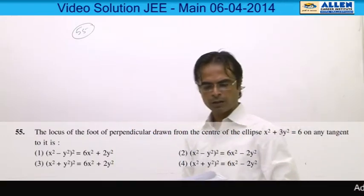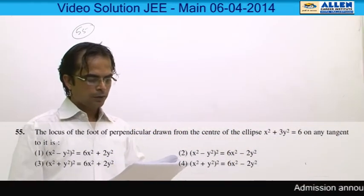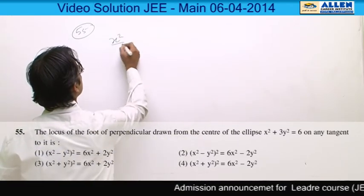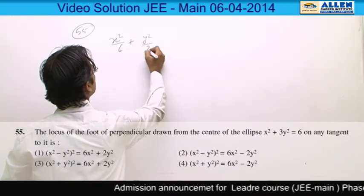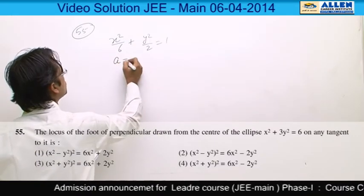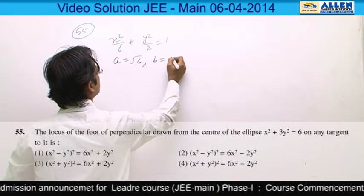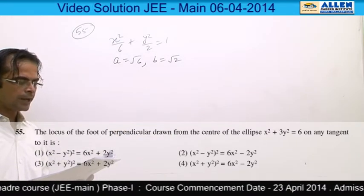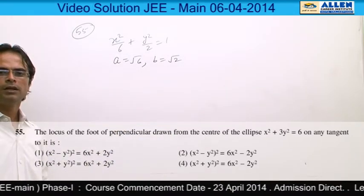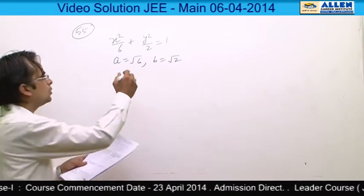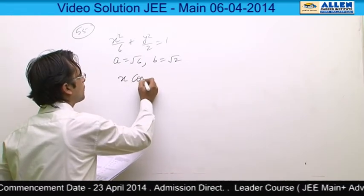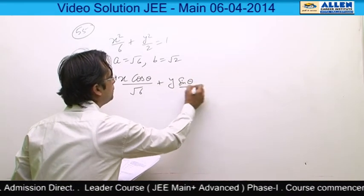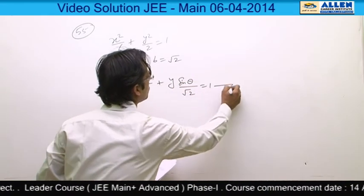Question number 55. The equation of the ellipse is x² / 6 + y² / 2 = 1, so a = √6 and b = √2. When we write the equation of the tangent, it is (x cos θ) / a + (y sin θ) / √2 = 1.